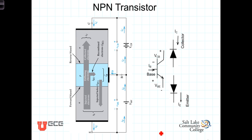We'll start by looking at the operation of the NPN transistor. In this diagram, you'll see the three regions: the N-type emitter, a relatively narrow and lightly doped P-type region, and then the heavily doped N-type collector. Both the emitter and the collector have relatively high concentrations of dopants, whereas the base has a relatively light doping concentration, and the width of the base is relatively small.